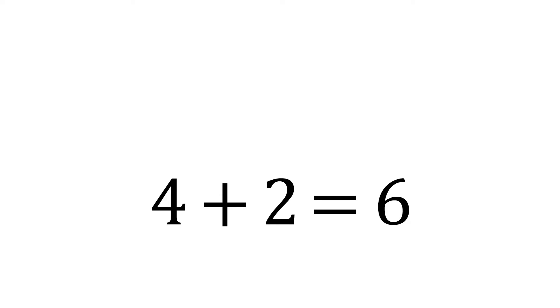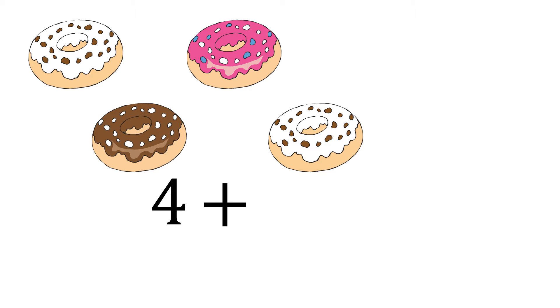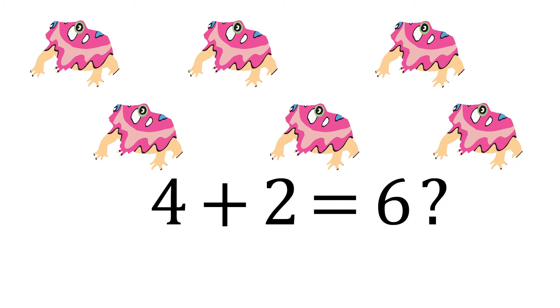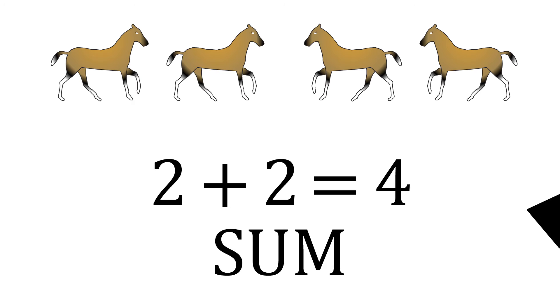But only if you add the same type of thing. Four donuts plus two frogs equals... Hmm, six bullfrogs? I don't think that sounds right. The answer to addition is called the sum. When you add two and two, the sum is four.